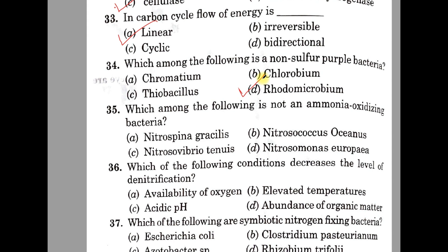Rhodomicrobium is a non-sulphur bacteria and it has chlorophyll called bacteriochlorophyll A and B for photosynthesis. Question number 35. Which among the following is not an ammonia-oxidizing bacteria? A: Nitrospina gracilis, B: Nitrococcus oceanus, C: Nitrosovibrio tenuis, D: Nitrosomonas europaea. The correct answer is option A, Nitrospina gracilis — it is a chemolithotrophic, nitrite-oxidizing bacteria that oxidizes nitrite to nitrate.